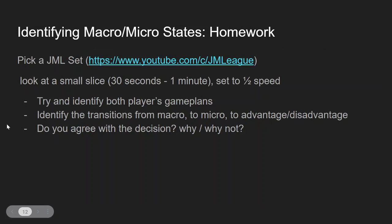Some homework for you guys: have a look at some JML sets of your own — it can be yours or someone else's. Clip about 30 seconds to a minute, set it to half speed or even quarter speed, and just pause it intermittently. Try to find — look at both players' gameplay. Are they playing a heavy character looking for a slow opening but can't get in? Are they playing a very fast character? Try and identify those transitions from macro to micro to advantage. And lastly, decisions can still work, but you need to agree or disagree if they were the right choice — sometimes you can pull out a random f-smash that might not have been the right option but just happened to work out. It's important to evaluate why the decision was made in the first place.